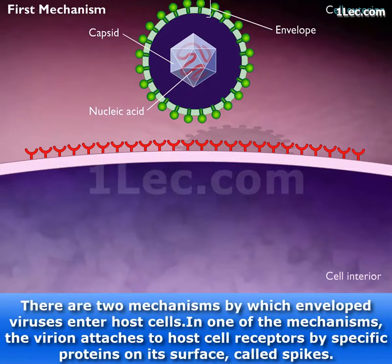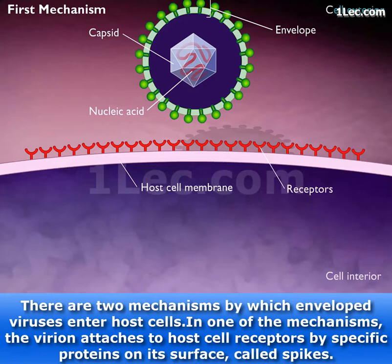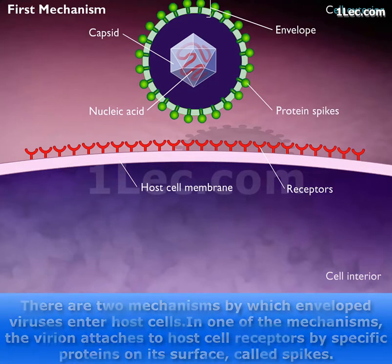There are two mechanisms by which enveloped viruses enter host cells. In one of the mechanisms, the virion attaches to host cell receptors by specific proteins on its surface, called spikes.